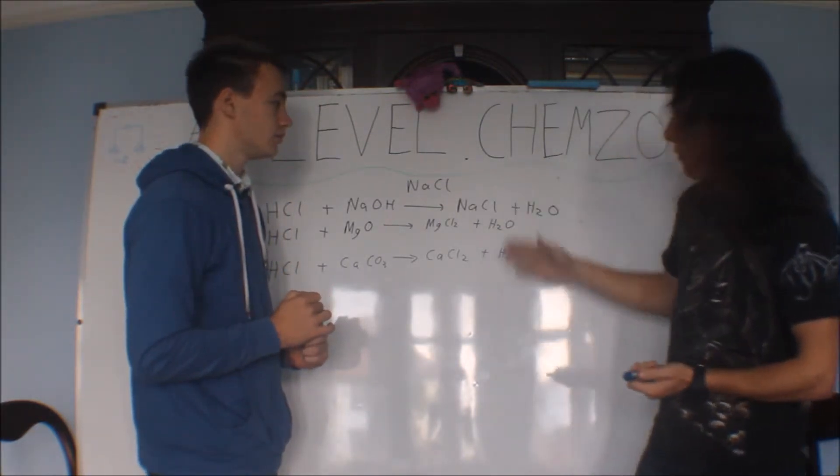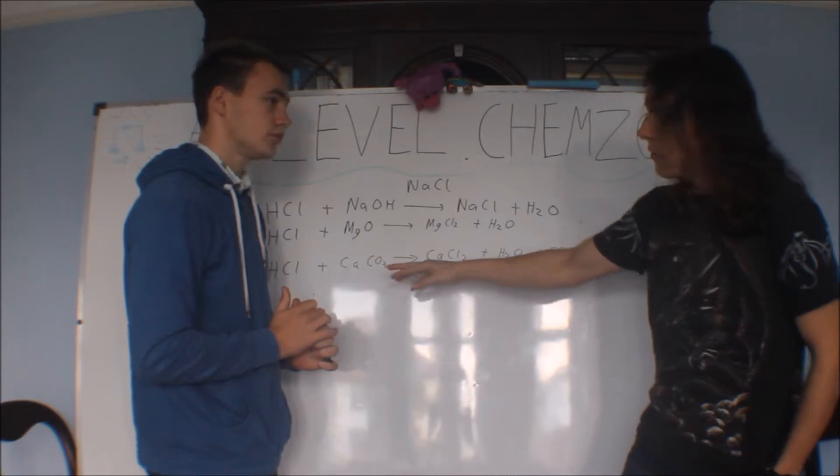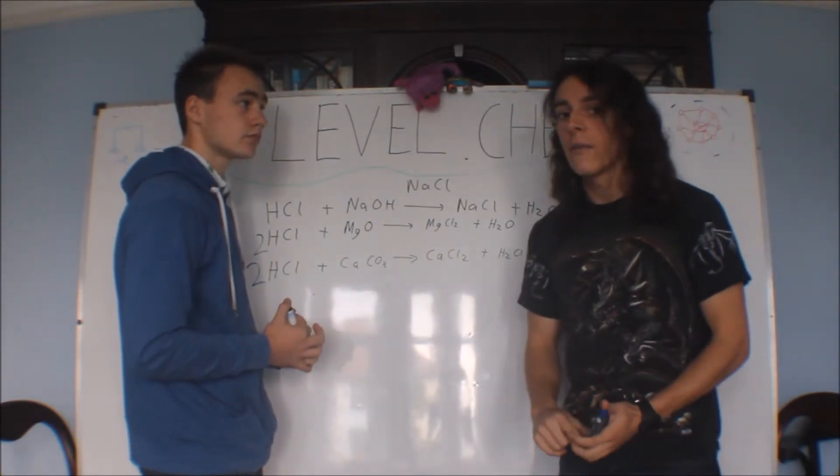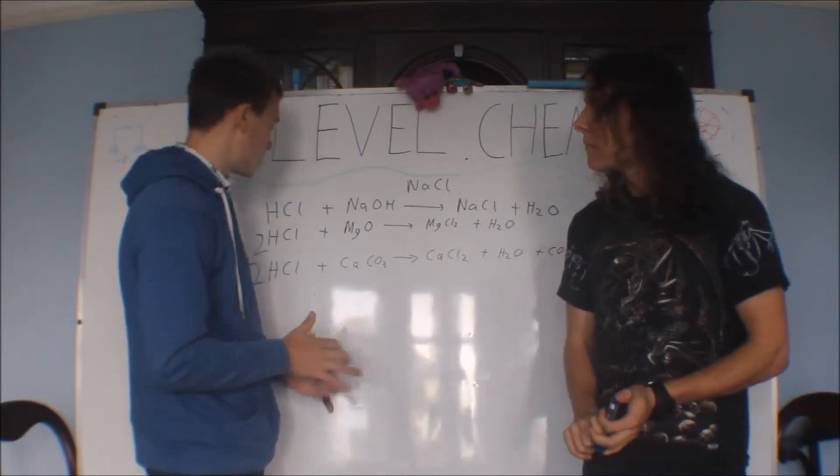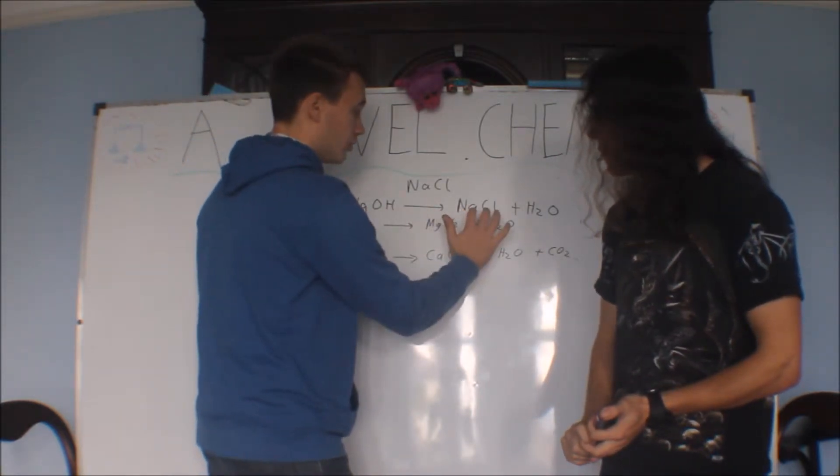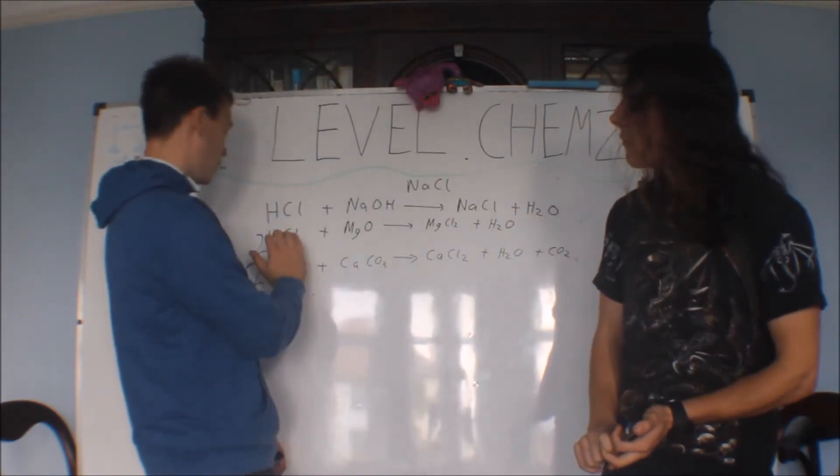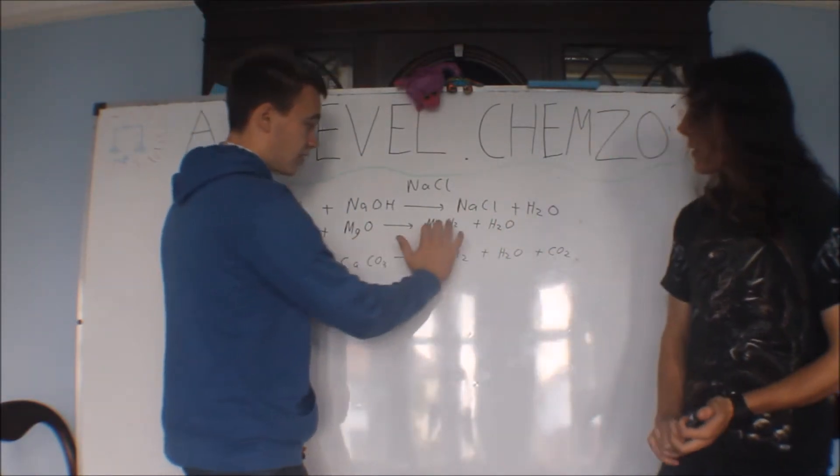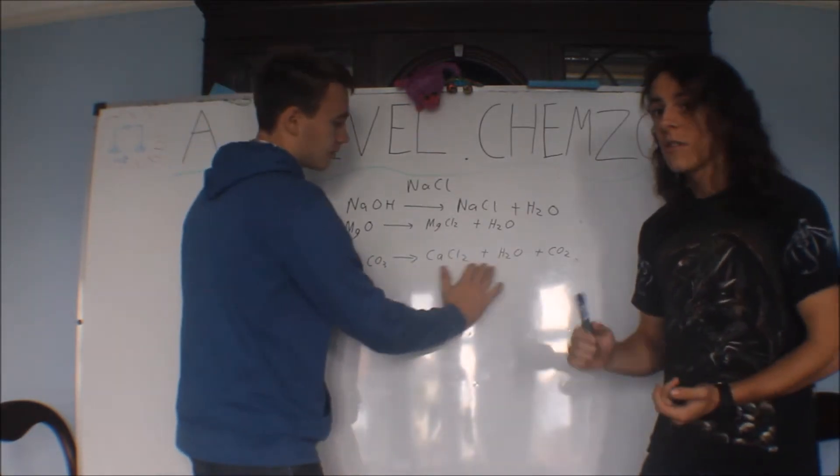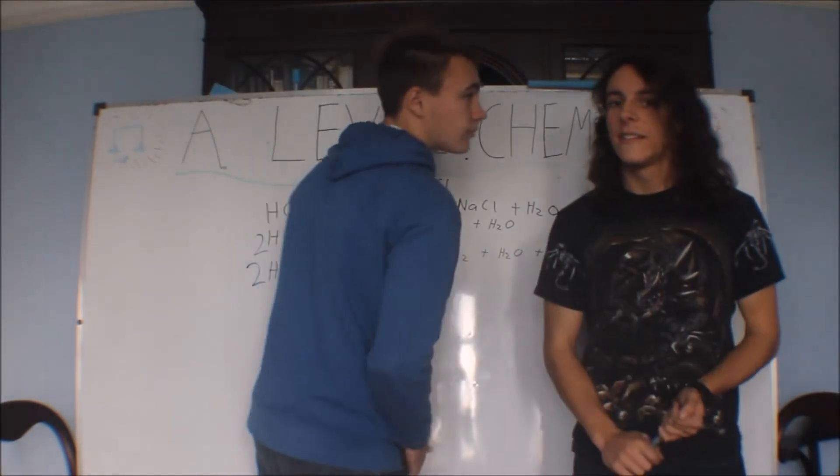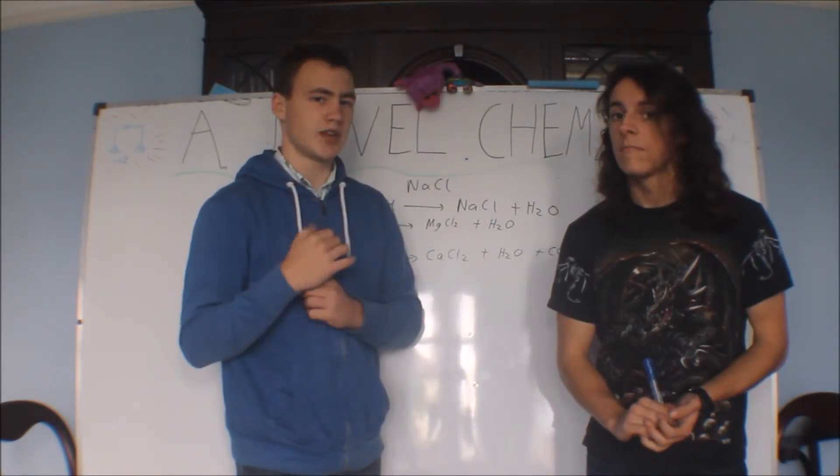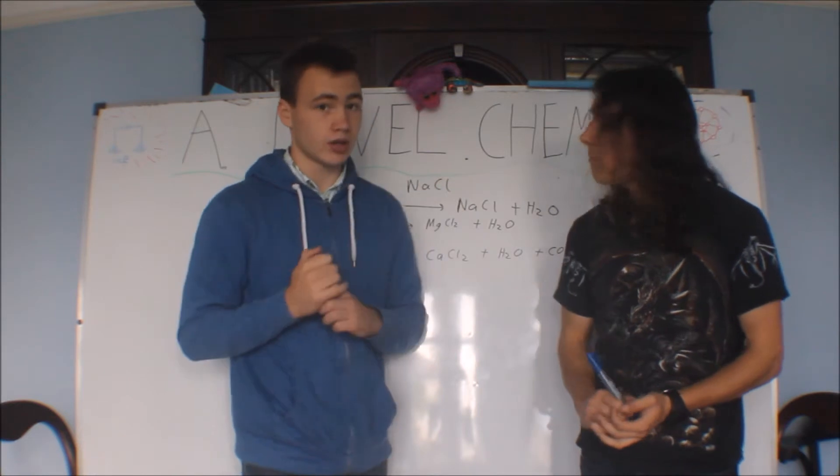And these three work with any set of carbonates, any acids. Just some happen faster or slower depending on the strength of the acid. So to sum up, any acid plus any hydroxide goes to the resulting salt and water. Any acid plus any metal oxide goes to the resulting salt and water. And carbon dioxide. Any acid will work in the same way. Just be careful to balance them and make sure you get the right products.